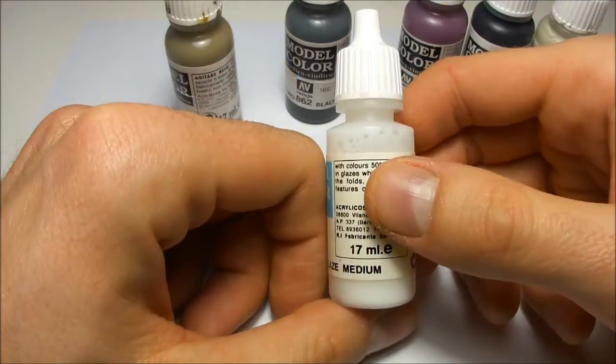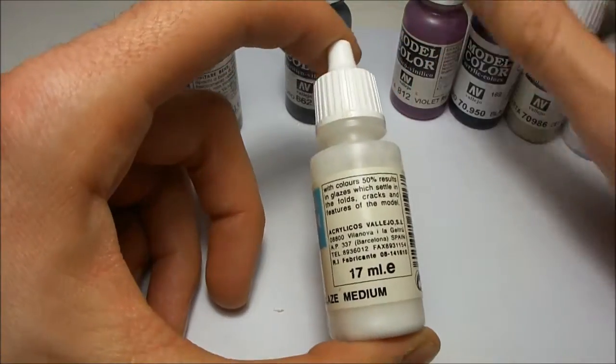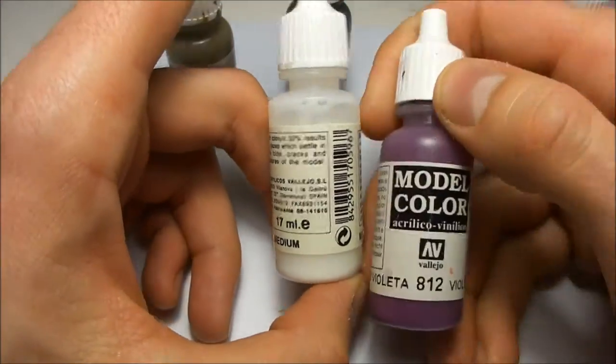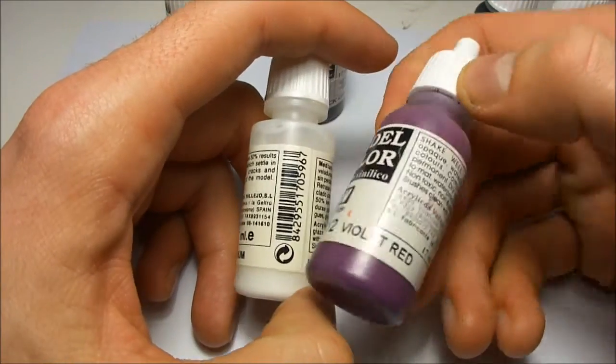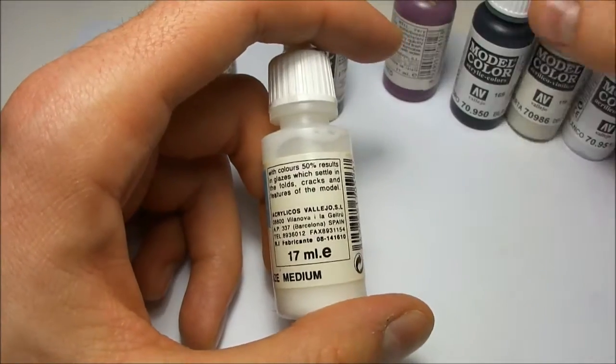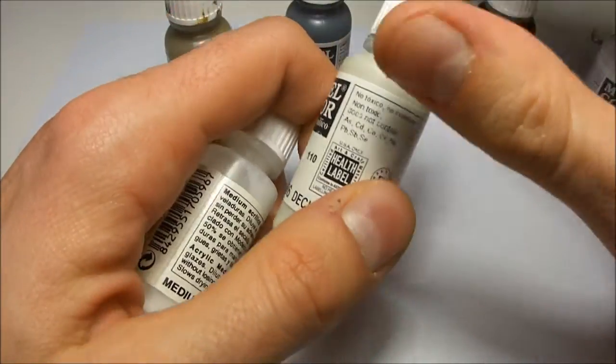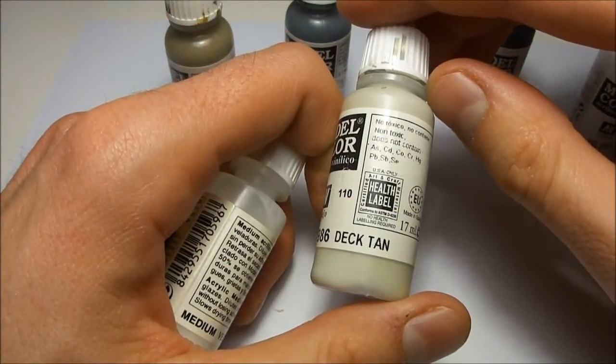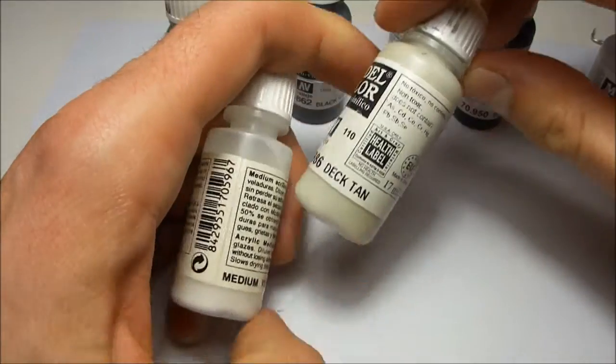It just involves adding some glaze medium to paint just to create a very thin paint. And then I think I did one or two glazes in the shadow areas with pure violet red, and then I think with the Deck Tan or some yellowish white, did some glazes on the highlighting areas.